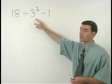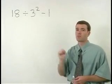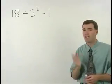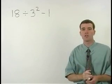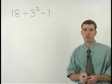So let's take a look at the exponent part of this problem, 3 squared. Remember that any number squared is that number times itself. So 3 squared is just 3 times 3, or 9.